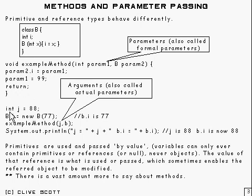Right, then down here we're going to do the call, and to start with we set j to 88, and we construct a new version of B. So at this point here, B.i is going to be 77. And then we do the call, passing j and B.